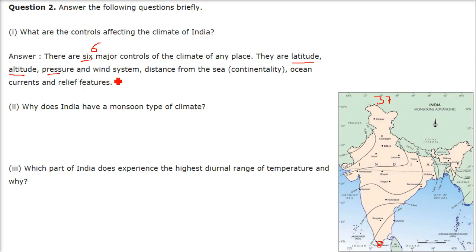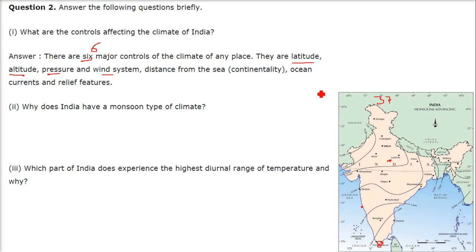The distance from the sea — this area has a continental climate. If you are inland, the climate will be different compared to near the sea. Then also the ocean currents. The water in the ocean is always moving, so they are ocean currents.